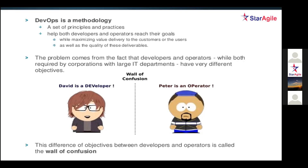The DevOps team consists of two kinds of people: those who develop products and those who handle the operations part to hand the product to end users. In the diagram, the left side represents David from the development background and the right side represents Peter from the operations team. When they were working in silos, there was a wall of confusion in between them.